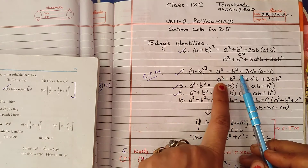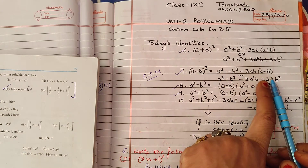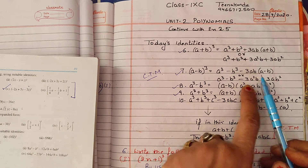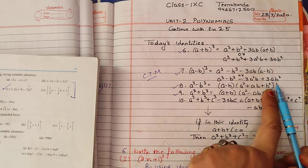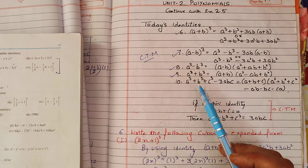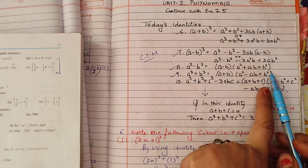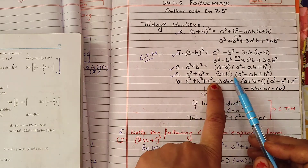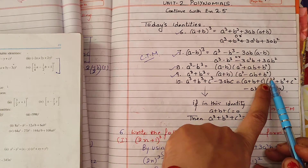A minus B whole cube is A cube minus B cube minus 3AB(A minus B). When we open the bracket, the minus sign changes to plus. So A minus B whole cube equals A cube minus B cube minus 3A square B plus 3AB square. We also use A minus B = (A - B)(A square minus AB plus B square), and A cube plus B cube = (A plus B)(A square minus AB plus B square).